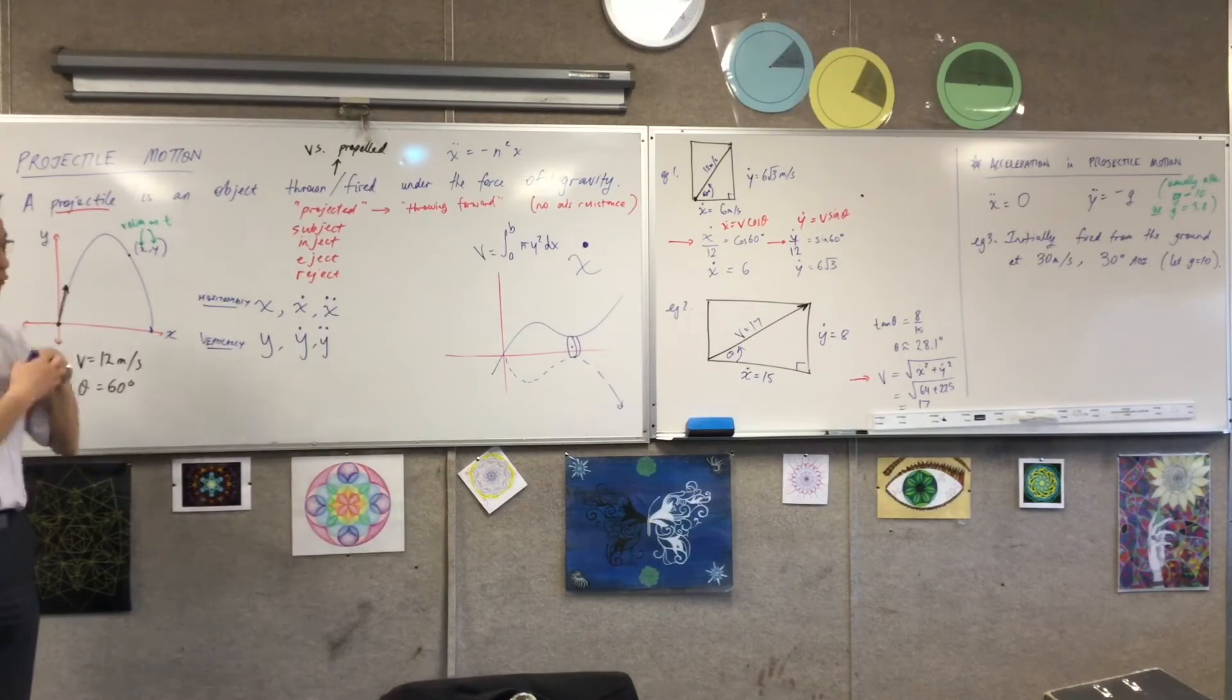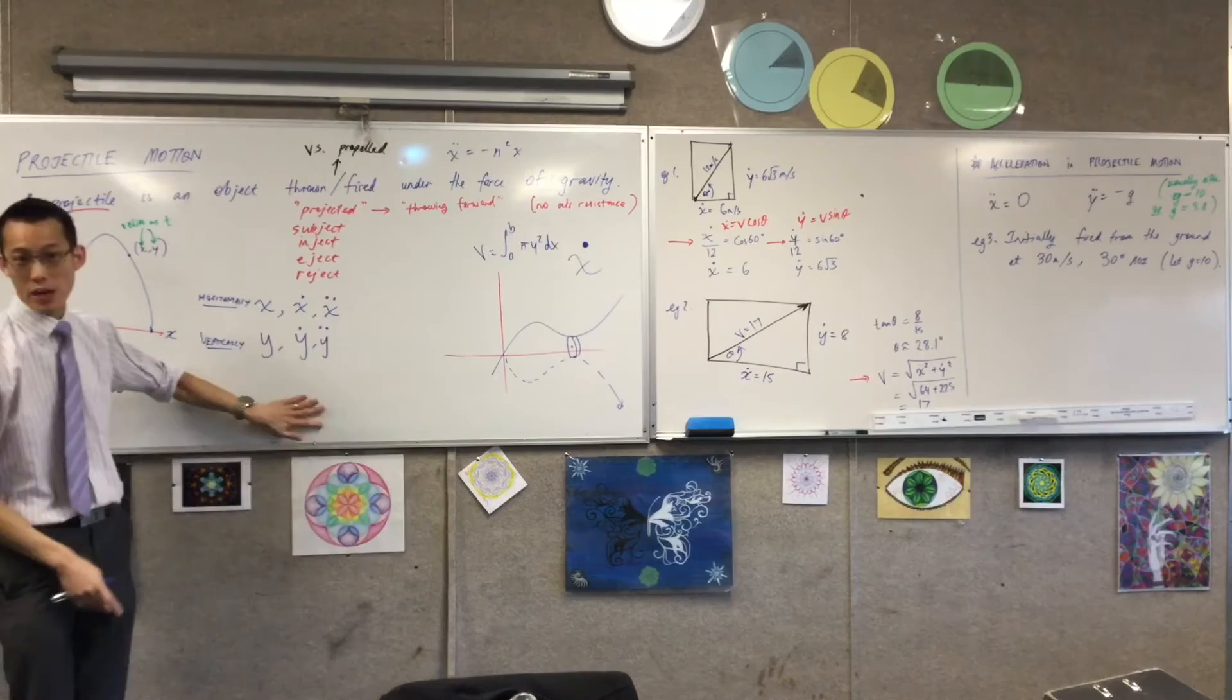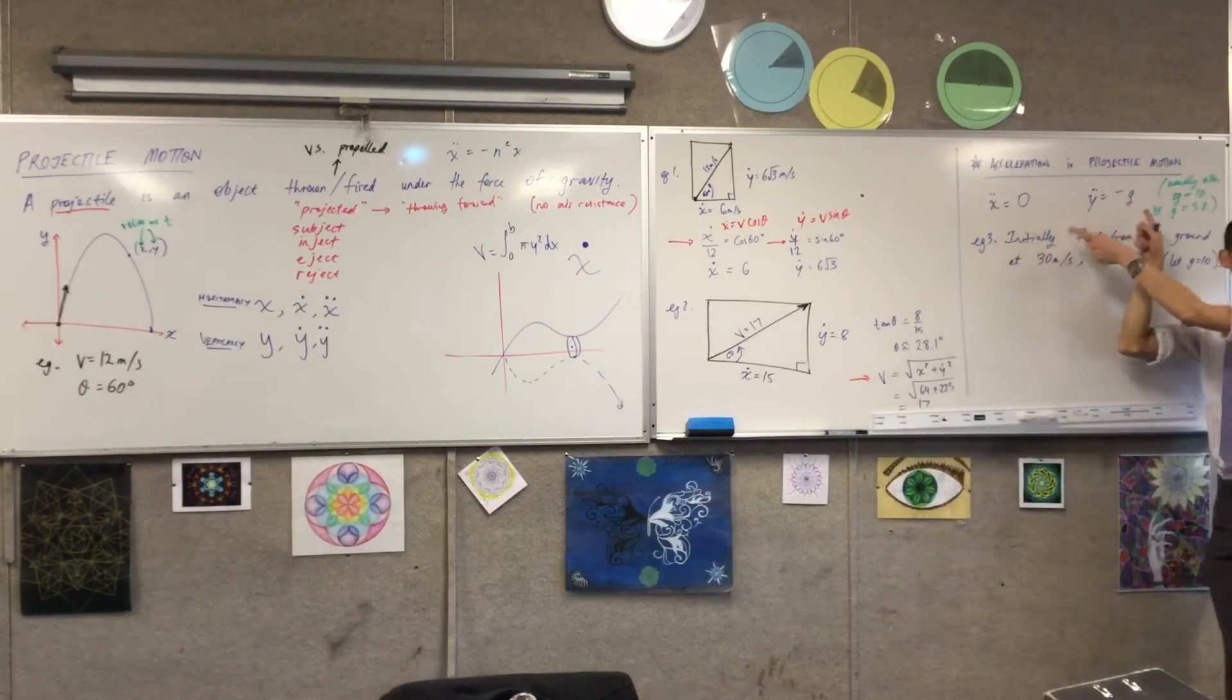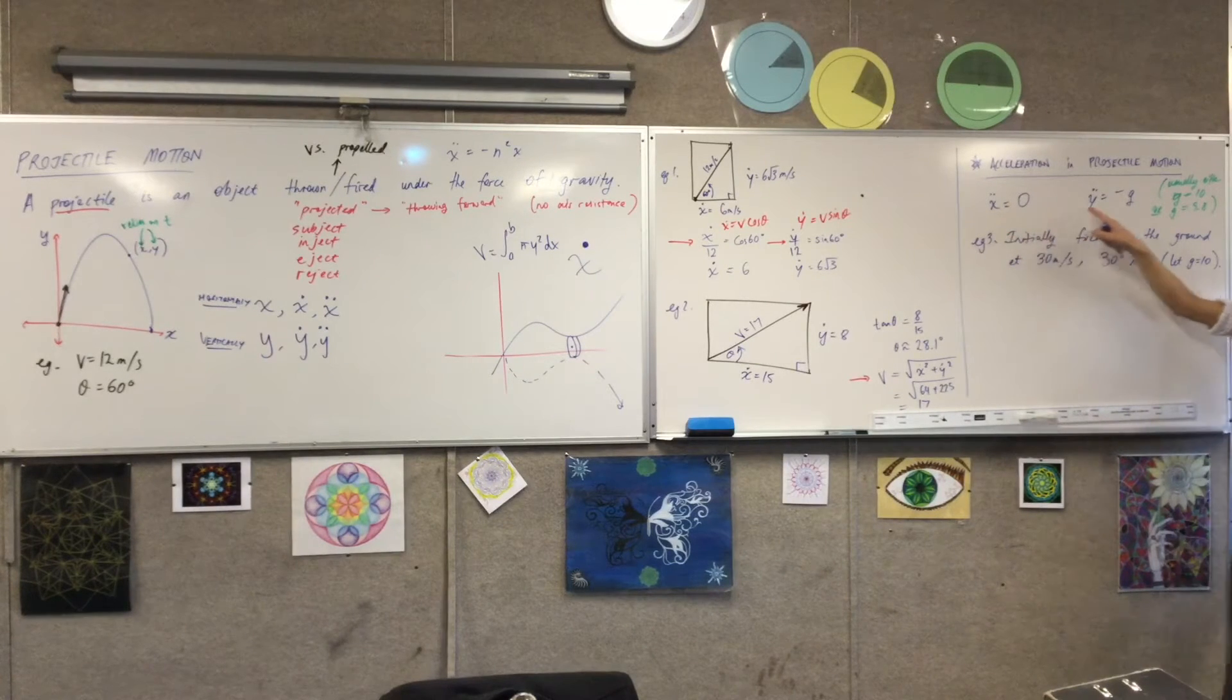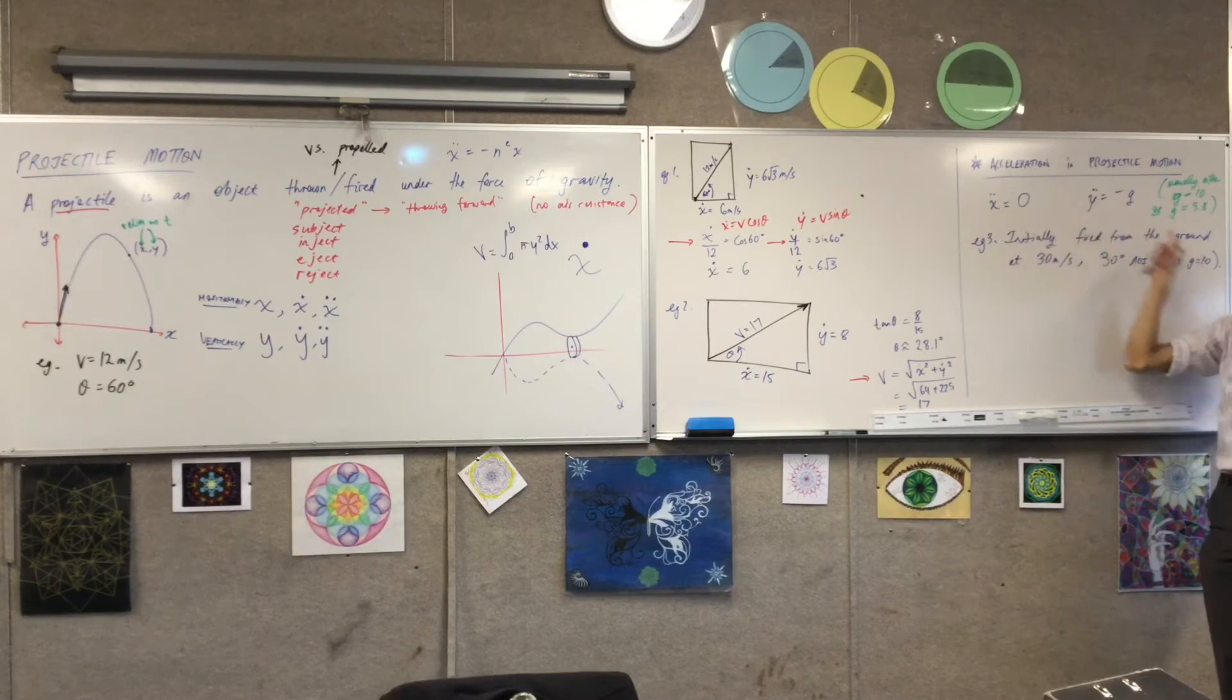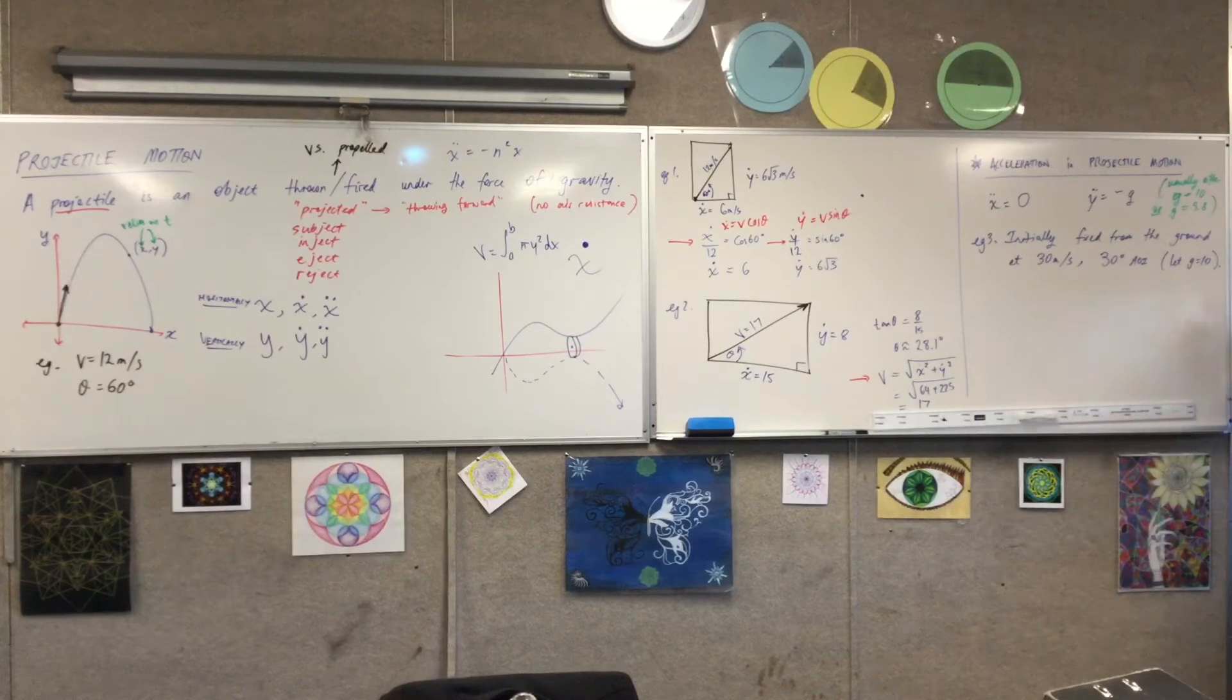All right. Now, first, let's get the equations of motion. It always starts with getting these six equations of motion. And because every single projectile motion question relies on these two ideas, right? It's projected, so it's not getting faster or getting slower. And it's under the force of gravity. So you've just got this, right? I'm always going to begin with these two. And I'm going to get everything else out of this information.